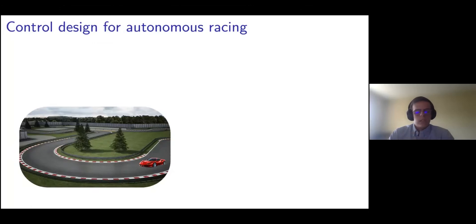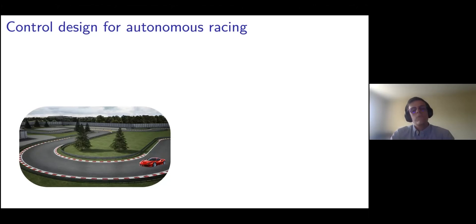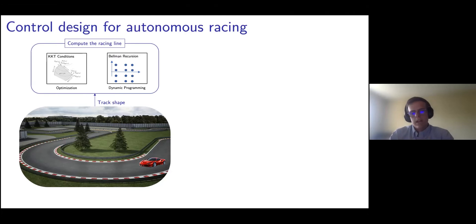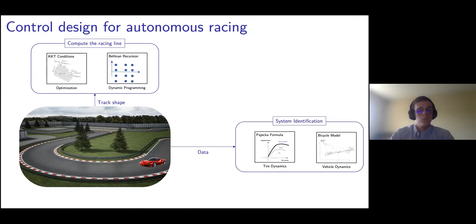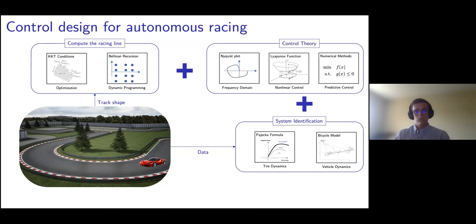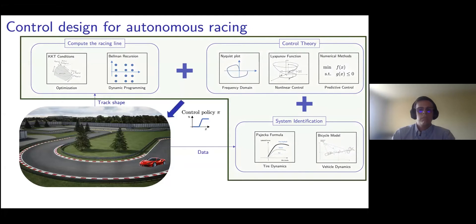Autonomous racing has been very well studied in the past 10 years, and there are several strategies that can be used to synthesize controllers for autonomous racing. Standard methodologies first leverage the shape of the track to compute a racing line using optimization or dynamic programming strategies and historical data to identify the system parameters that describe the evolution of the model. Then the identified model and the racing line are used together with tools from control theory to design a tracking controller, and this entire pipeline can be used to synthesize a control policy that maps states to control actions.